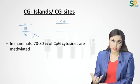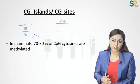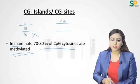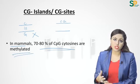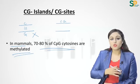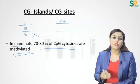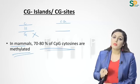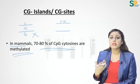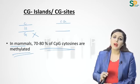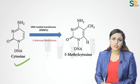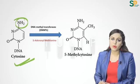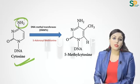The cytosine of CG sites is usually methylated, leading to inactivation of that gene. In mammals, 70 to 80 percent of cytosine at CG sites is methylated, meaning 70–80% of genes in mammals are inactivated. Most genes we don't require and that's why they are methylated. If we require those genes, we can activate them by removing the methyl group.